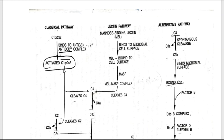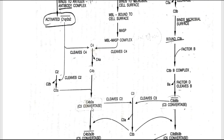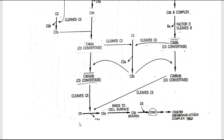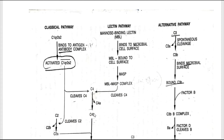To summarize the classical pathway: the C1qr2s2 complex activates, binds to the immune complex, and cleaves C4 and C2. C2a and C4b combine to form C3 convertase, which cleaves C3 into C3a and C3b. C3b combines with C3 convertase to form C5 convertase, which cleaves C5 into C5a and C5b. C5b binds to the cell surface, combines with C6, and forms the membrane attack complex.